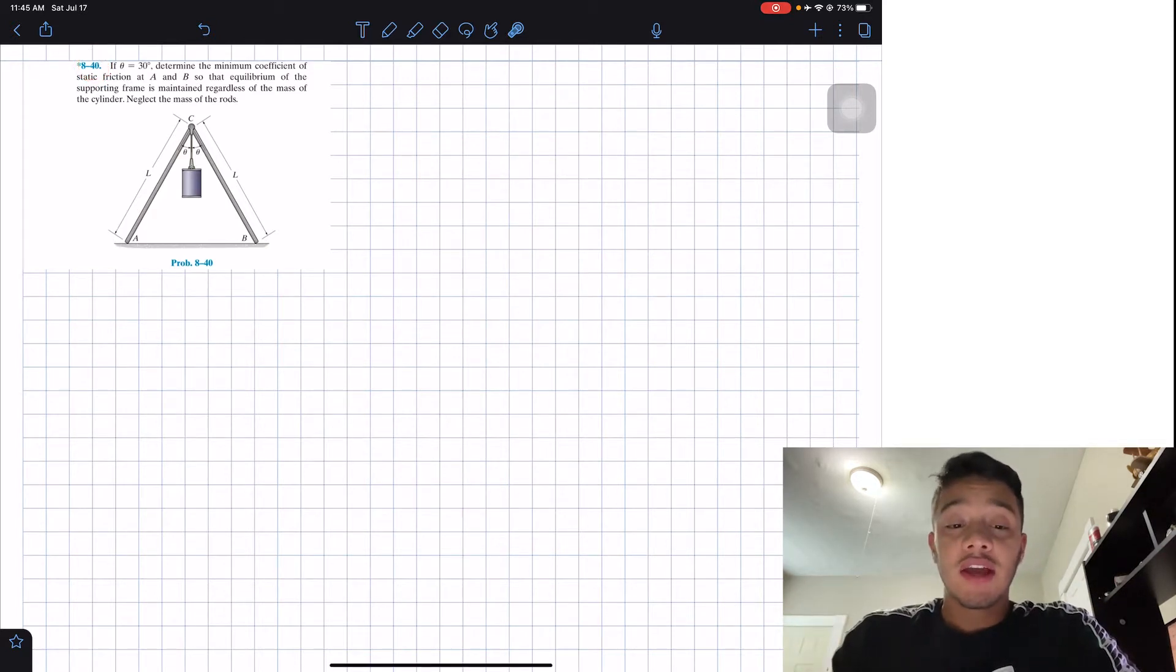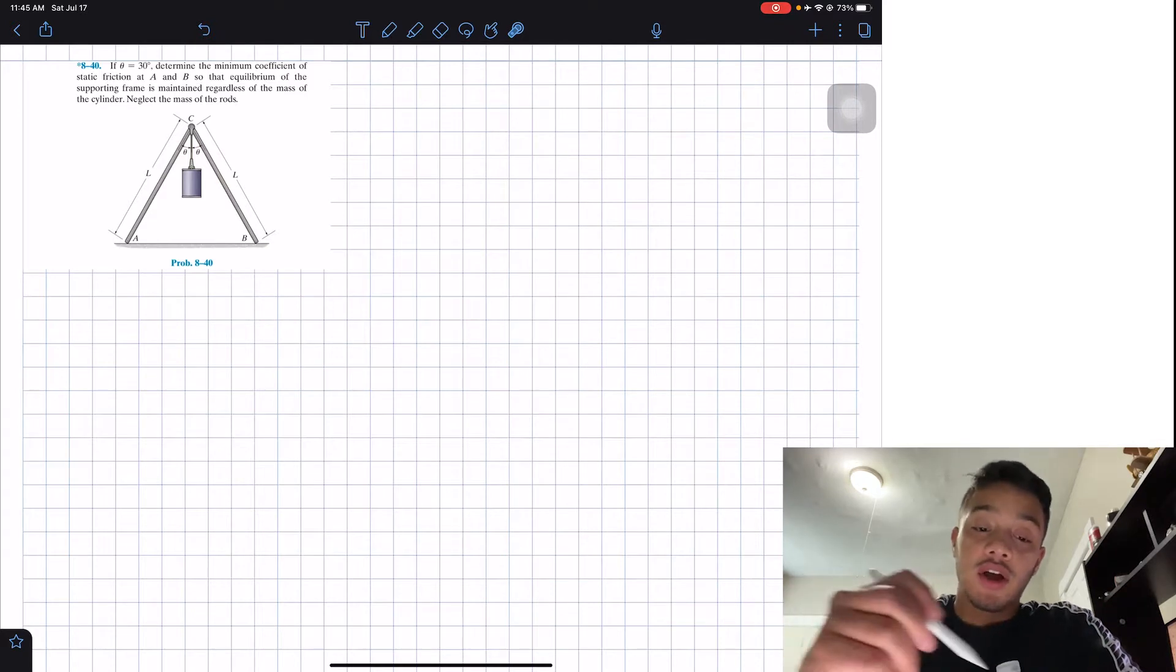It says if my angle theta is equal to 30 degrees, determine the minimum coefficient of static friction at A and B so that equilibrium of the supporting frame is maintained regardless of the mass of the cylinder. Neglect the mass of the rods.